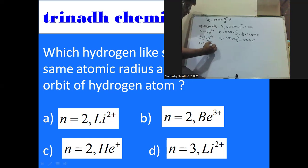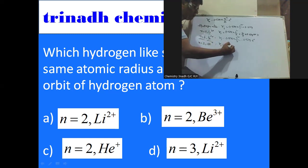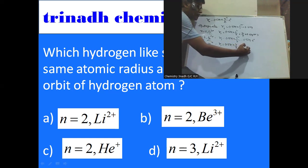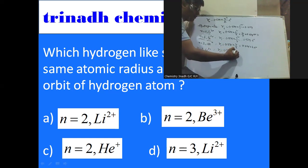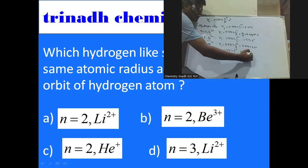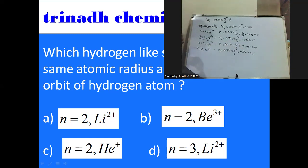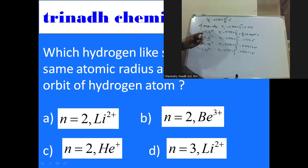Let me also check the other options. For He⁺ (n = 2): r = 0.529 × 4/2 = 0.529 × 2, which is too large. For Li³⁺ (n = 3): r = 0.529 × 9/3 = 0.529 × 3, also not matching. Therefore, the hydrogen-like species with the same atomic radius as the first Bohr orbit of hydrogen atom is n = 2, Be²⁺.